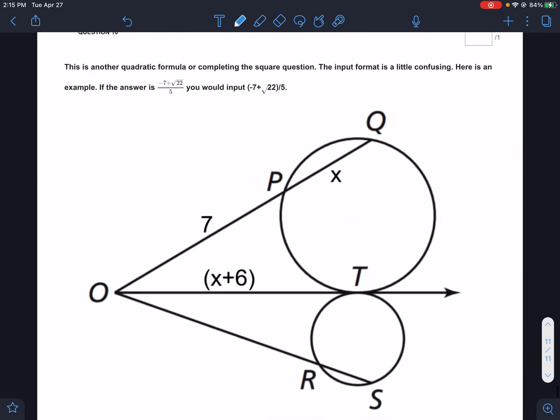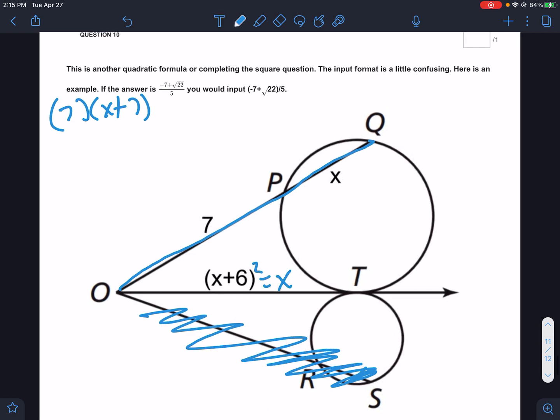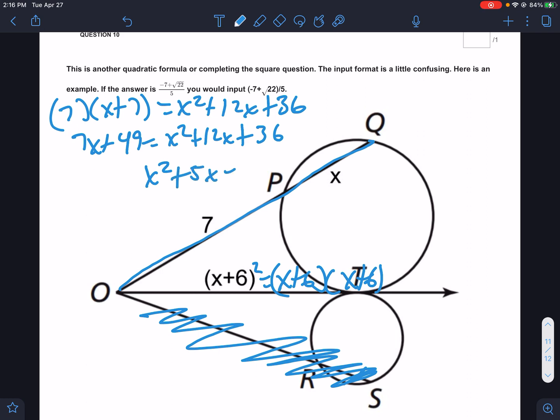Down here, it's another quadratic formula. There's no numbers over on this, so that's just useless. But we do know we have outside 7 times total, which would be x plus 7. This whole thing would be x plus 7. And then we have x plus 6 squared, which is x plus 6 times x plus 6, which comes out to x squared plus 12x plus 36. So I have 7x plus 49 equals x squared plus 12x plus 36. Make that side 0. Minus 7 would be plus 5x. Minus 49 would be minus 13.